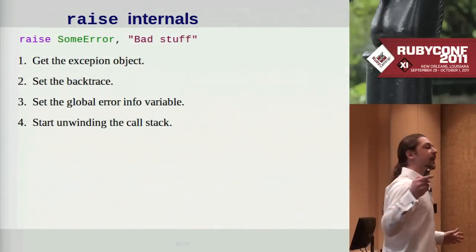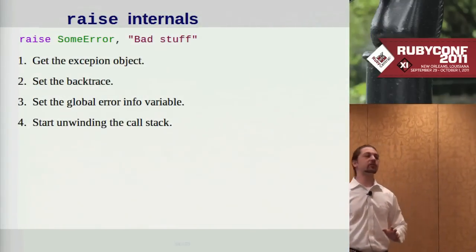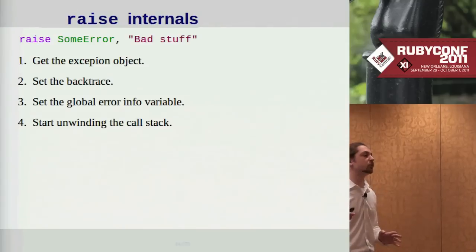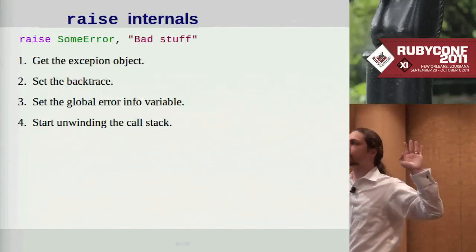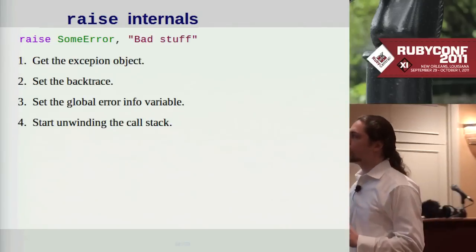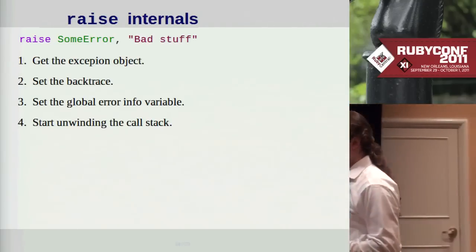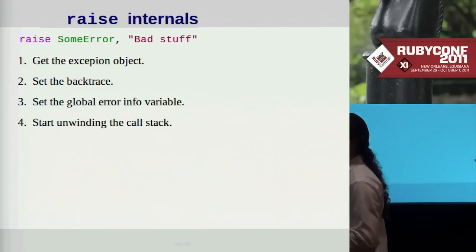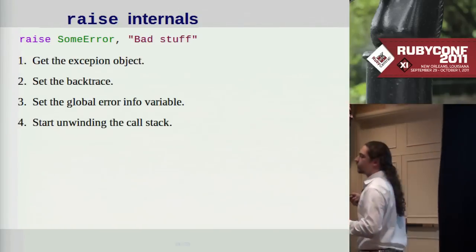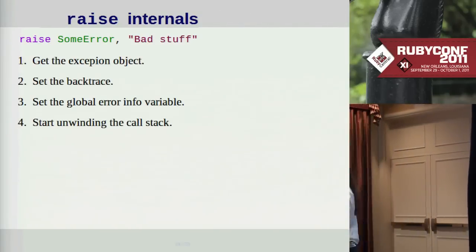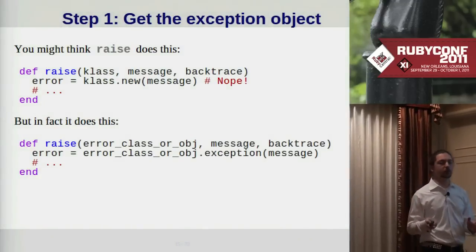What does raise actually do? It turns out that raise breaks down into four steps: first it gets the exception object, then it sets the backtrace, then it sets the global error info variable, and finally it starts unwinding the call stack.